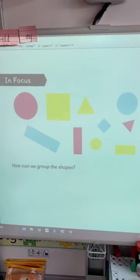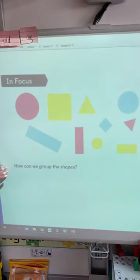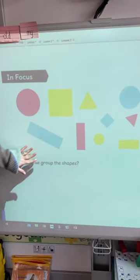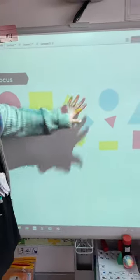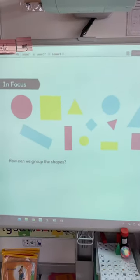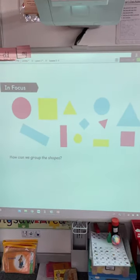And this is what your in-focus task looks like. So it says here, how can we group these shapes? So look at all these shapes on here. How can we group them? If I asked you to put them into a group, how would you do it?